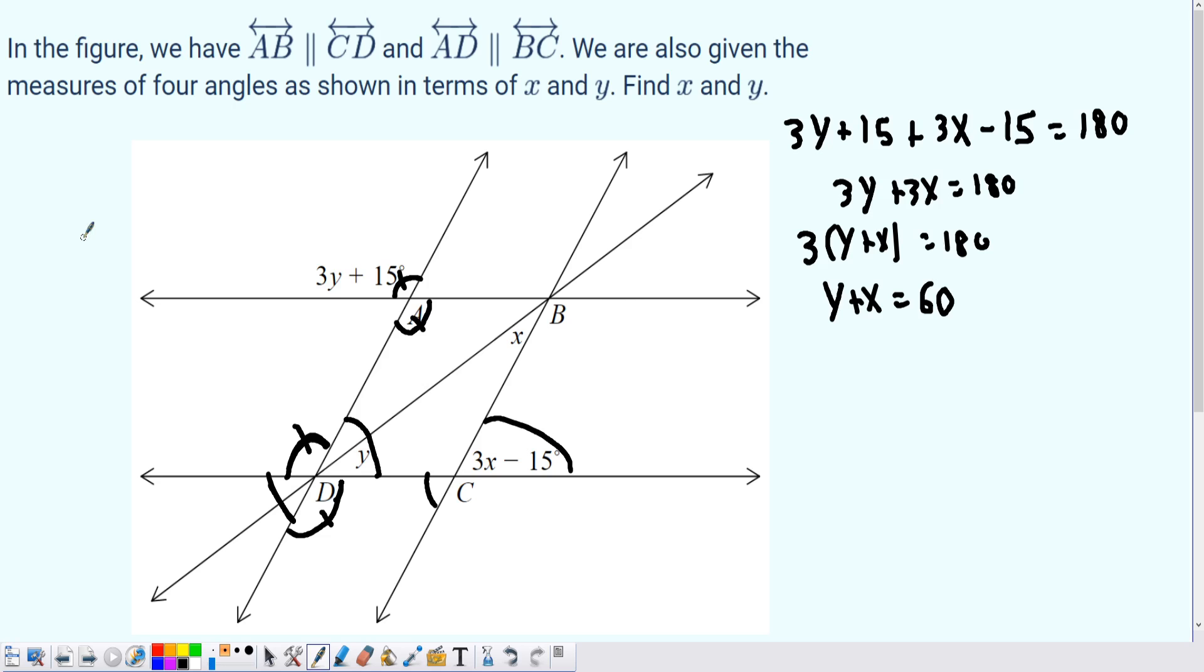Now that's fine, but I still have two variables, so what can I do with those two variables? Now it's time to start looking at that extra line, DB, that weird transversal that seems to be kind of in the way of things. Let me erase some of this stuff here, since I hope at this point we understand what angles are going to be the same and what angles aren't going to be the same.